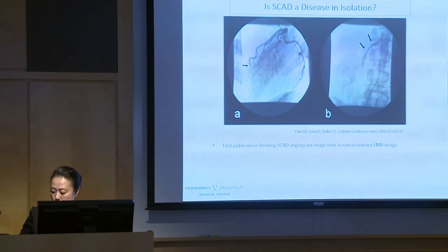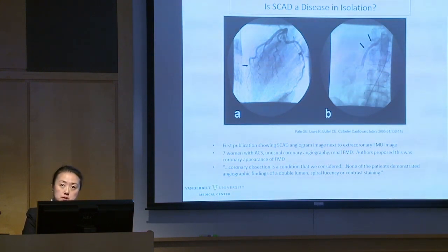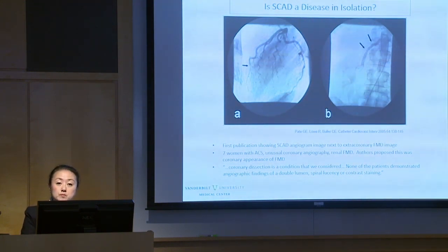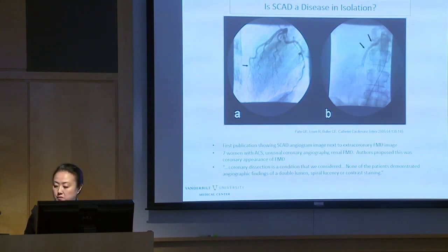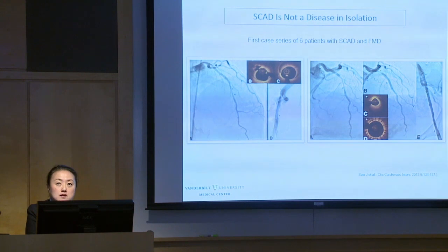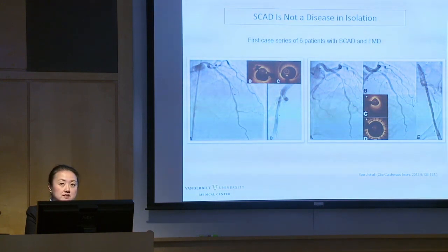Fortunately SCAD does not affect the vast majority of patients with FMD, but I do think it is a presentation of FMD. This first picture shows a SCAD angiogram next to FMD's beaded appearance of the renal artery. Back then, authors wrote that coronary dissection was considered the cause of the abnormal angiogram, but none of the patients demonstrated the double lumen, spiral lucency, or contrast staining of Type 1 SCAD. We've come a long way since Dr. Buehler published this.